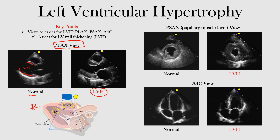This is our interventricular septum in this region. Notice in the picture that shows LVH, the wall has thickened quite a bit, and so has the interventricular septum. The LV cavity is now smaller. Notice the difference in size between them — that thickening of the left ventricle wall is what you want to look for.